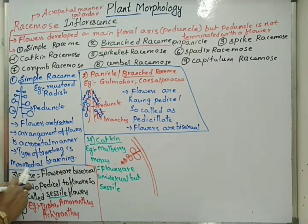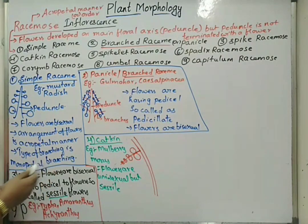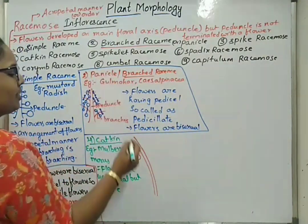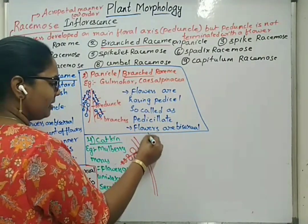Catkin inflorescence is seen in case of Mulberry and Morus. Next one is spikelet racemose.